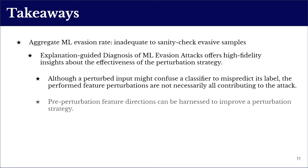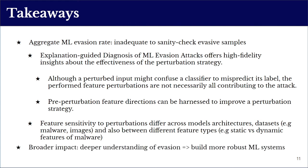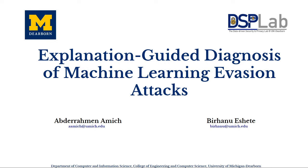Future works on evasion attacks can be guided to perturb only necessary features using the feature directions, in line with the results of the case study. Feature sensitivity to perturbations varies across model architectures, datasets, and feature types. Finally, we believe such results might enable future efforts toward more robust machine learning systems. We thank you for your interest in this work and welcome questions; you can also reach us via email for further discussions after the conference.